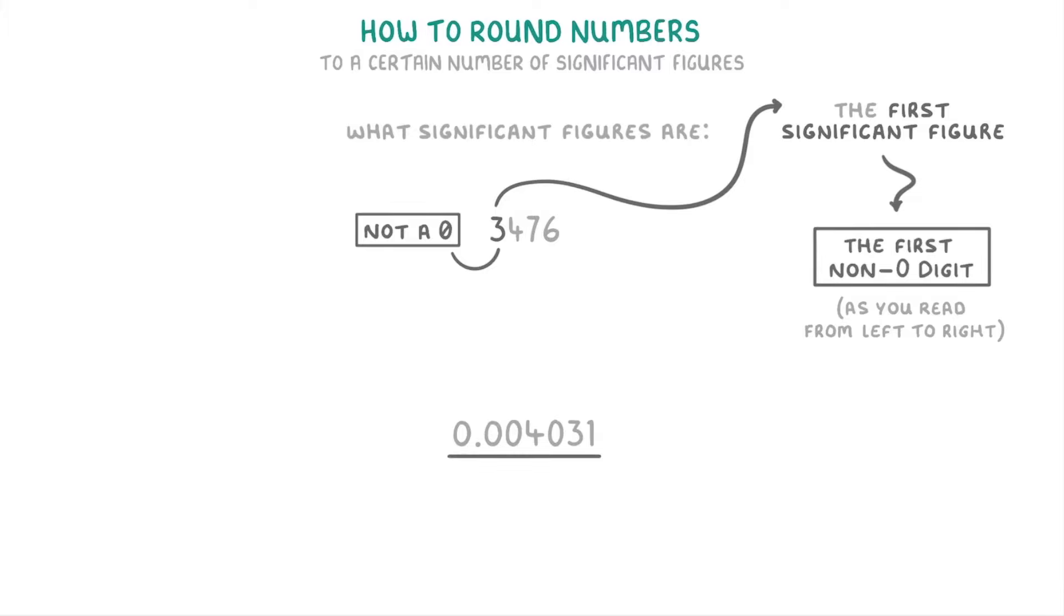Whereas for 0.004031, this four is the first significant figure because as we read from left to right, these first three digits are all zeros so we don't count them.